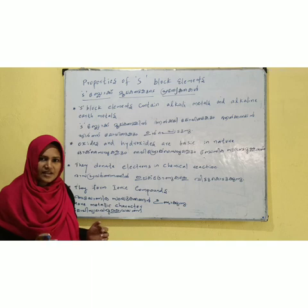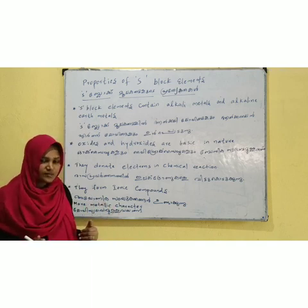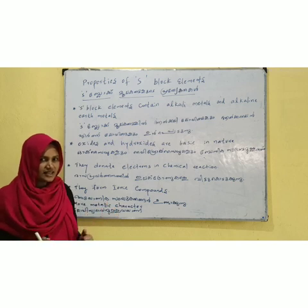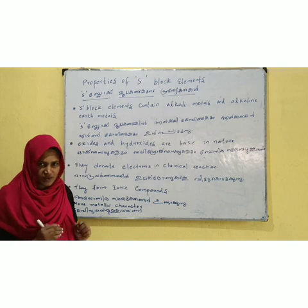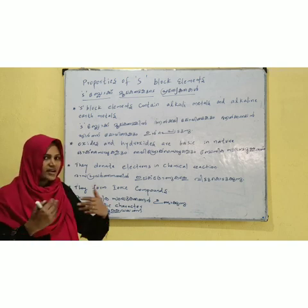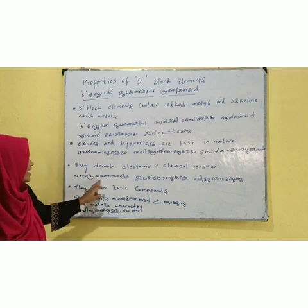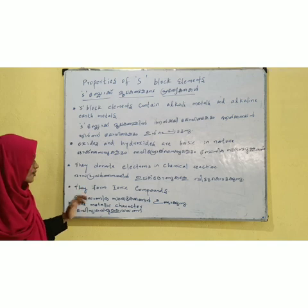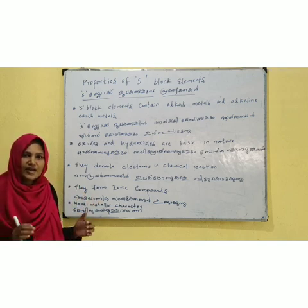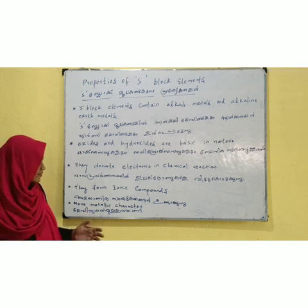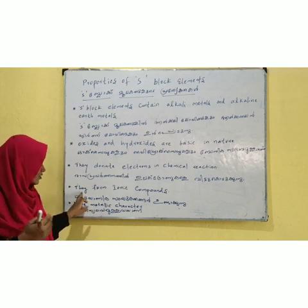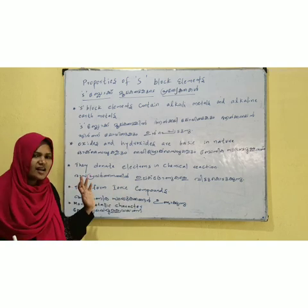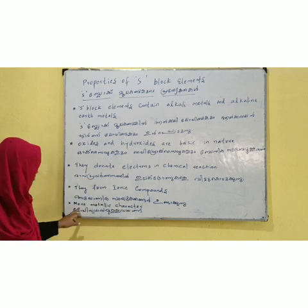S-Block elements have one electron or two electrons in their outermost shell. These electrons are donated, and the two atoms use these electrons to form an ionic bond. This gives S-Block elements a more metallic character.